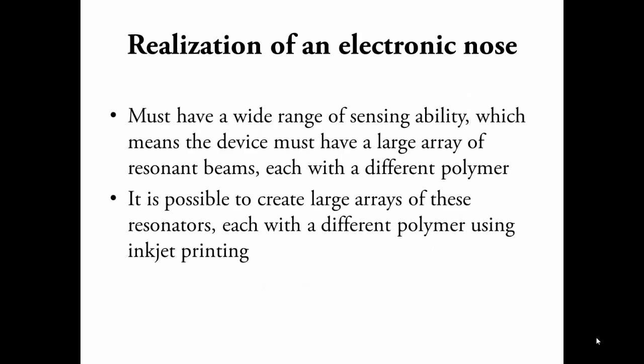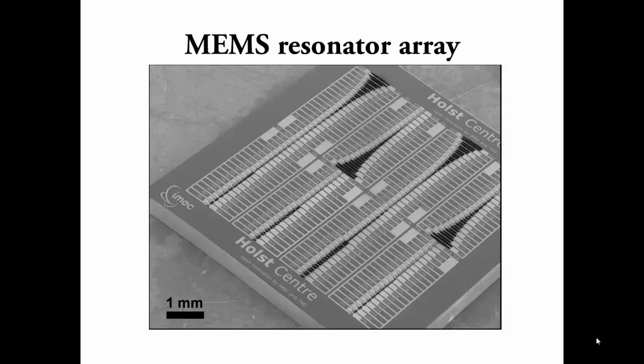To successfully create commercial electronic sniffers, the sensor must be able to sense a wide range of chemical species. Since one resonator can sense only one kind of chemical, there needs to be a large array of such sensors, each with a different sensing polymer. It is possible to create such arrays and coat each resonator using inkjet printing techniques. As more selective polymers are invented, it is possible that in the future a nose that has the same range of smelling ability as humans but a million times more sensitive can be created. A large array of resonance sensors is shown in this picture, each with a different polymer for sensing different kinds of chemicals.